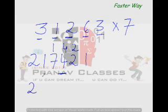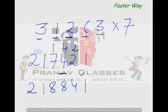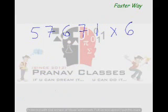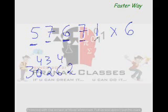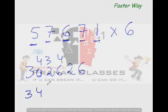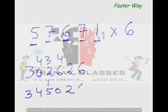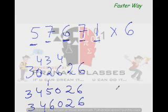Now add all the numbers: 2, then 1+7 is 8, then 4+4 is 8, then 2+2 is 4, then 1. And for the next example — 5×6 is 30, 7×6 is 42, 6×6 is 36, 7×6 is 42, 1×6 is 6. Adding from left to right: 3, 4, 3+2 is 5, 6+4 is 10, write 1 then 0, then 2, then 6. The answer is 346,026.